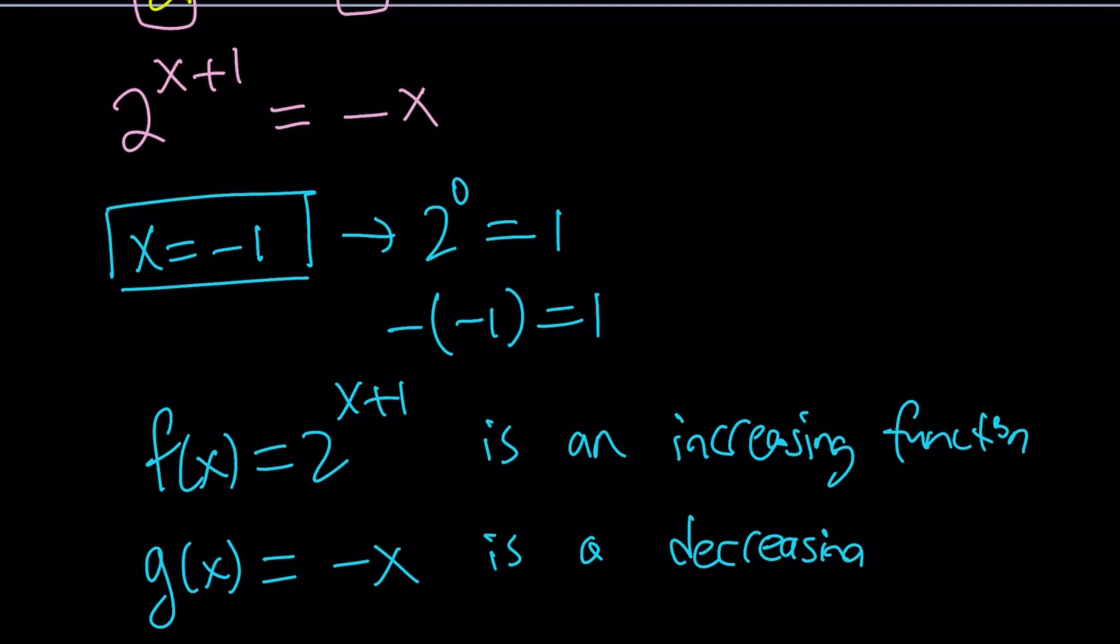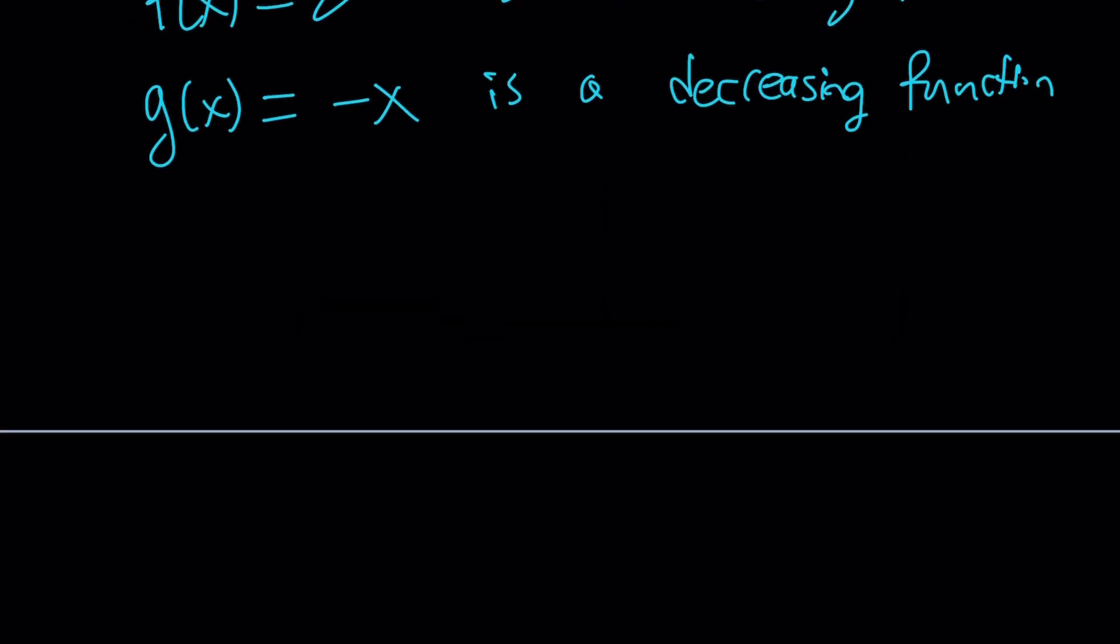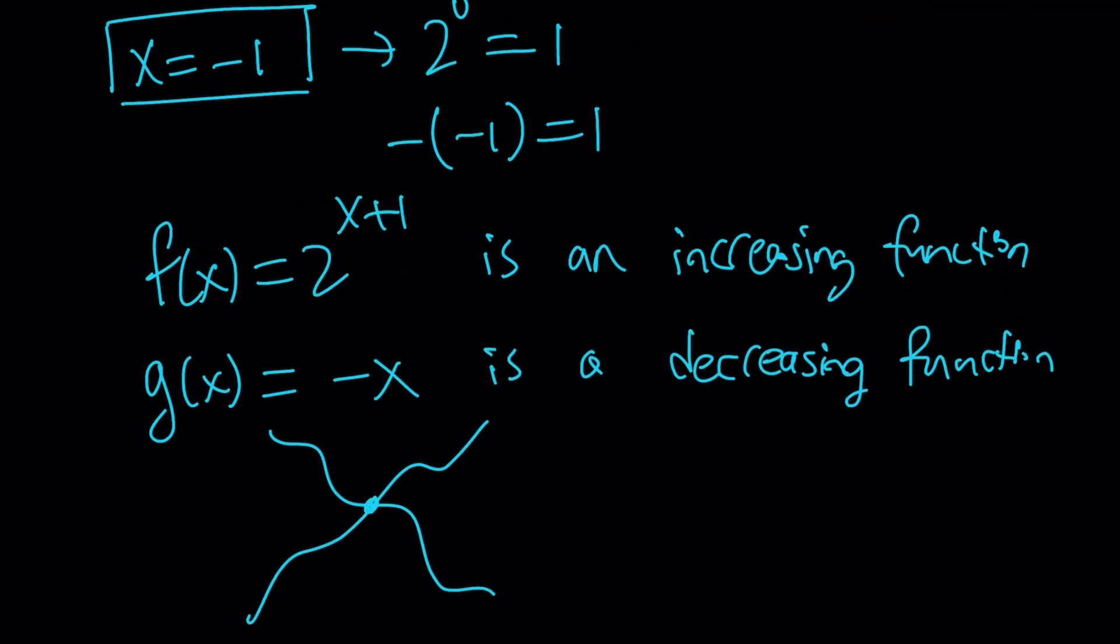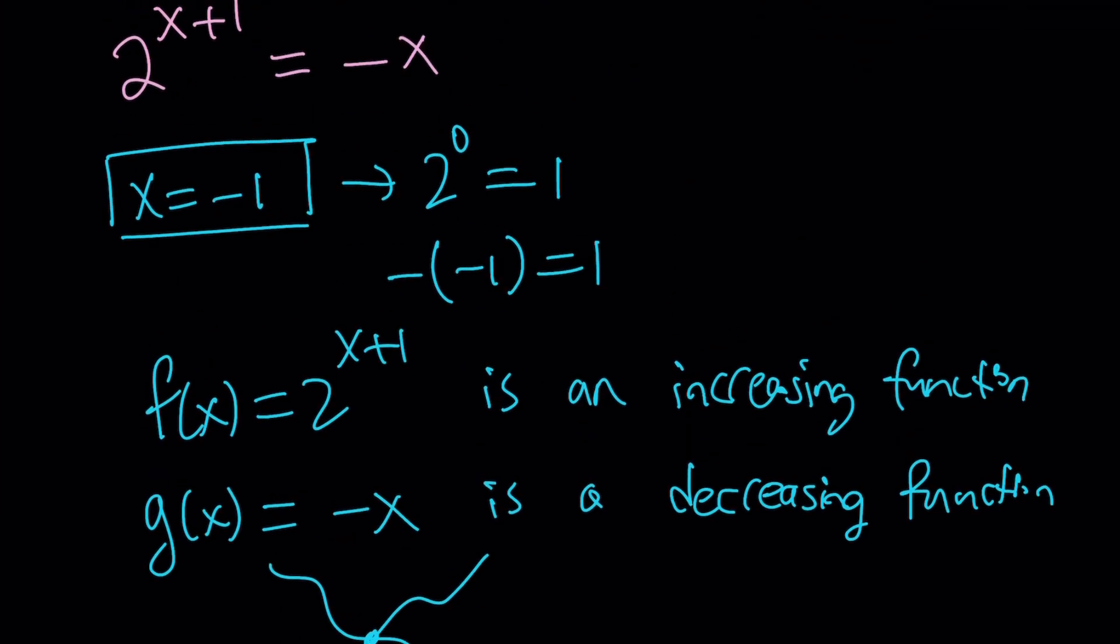And what is that supposed to mean in terms of intersection points? You have a decreasing function. And the shape doesn't matter much here, curve, linear, whatever. If you have an increasing function and a decreasing function, they're only going to intersect at a single point. And that's the point we found. So x equals negative 1 seems to be the only solution to this equation.